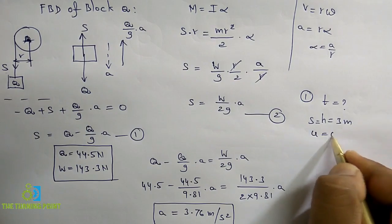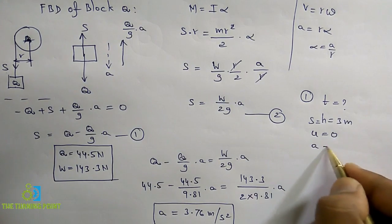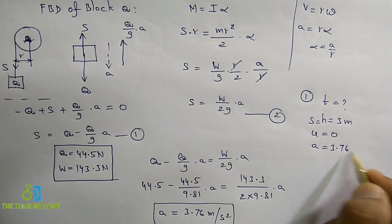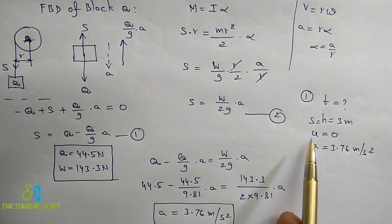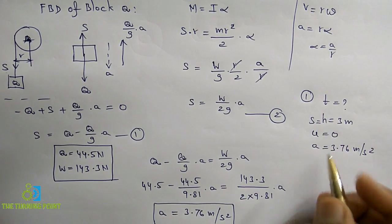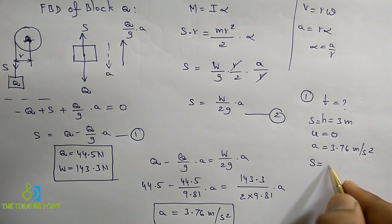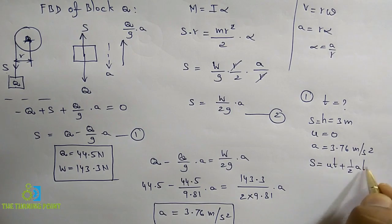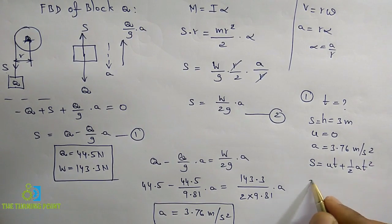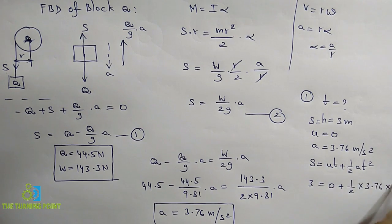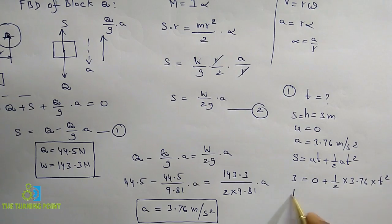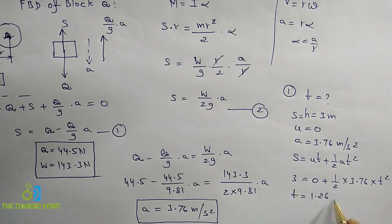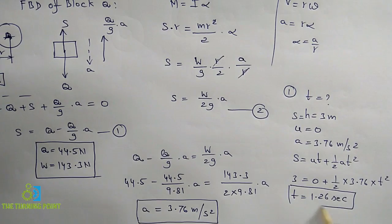And acceleration you got, that is 3.76 meters per second squared. So you need to find time. S is there, U is there, A is there, T you need to find. What equation you can use is S equals UT plus half AT². So S is 3 meters, initial velocity is zero plus half into 3.76 into T². From that you can find the value of T, which will be equal to 1.26 seconds. This is the answer for the first bit.